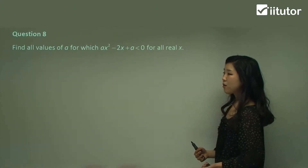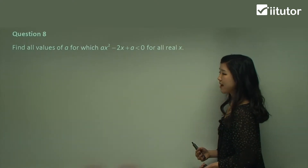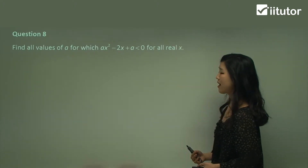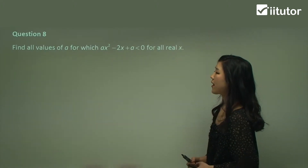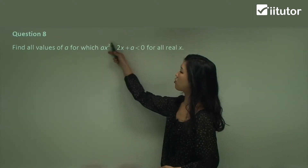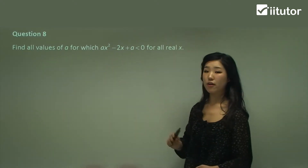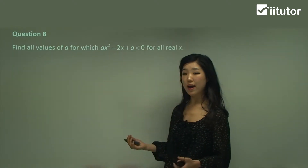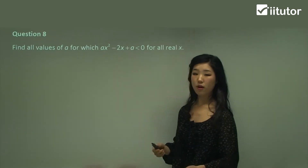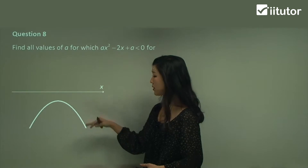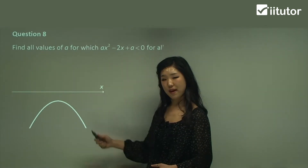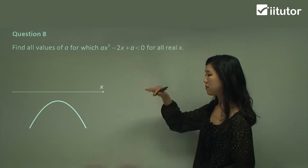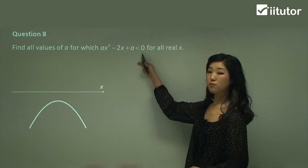Question 8 says: find all values of a for which ax² - 2x + a must be less than zero for all real x. This quadratic function must be less than zero. If y is less than zero, it must be negative definite — below the x-axis, sad face. It must not touch the x-axis at all, so it must be below the x-axis for this to make sense.